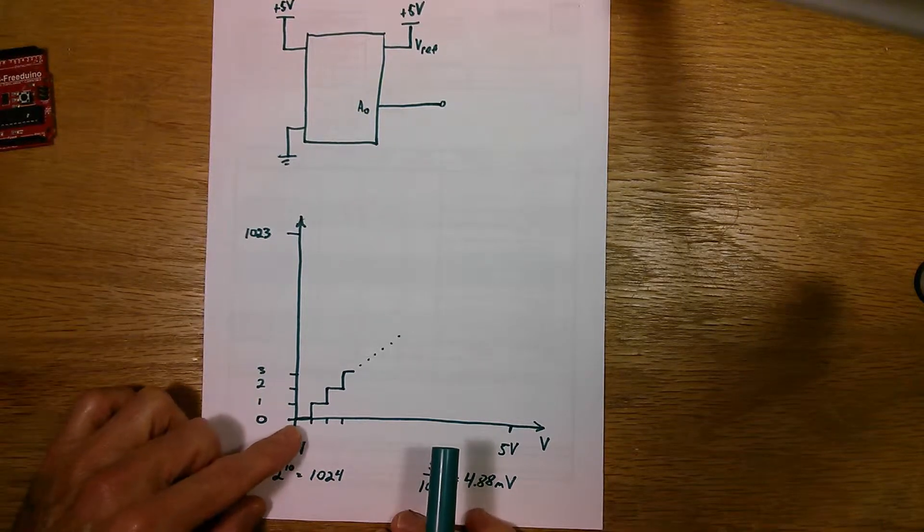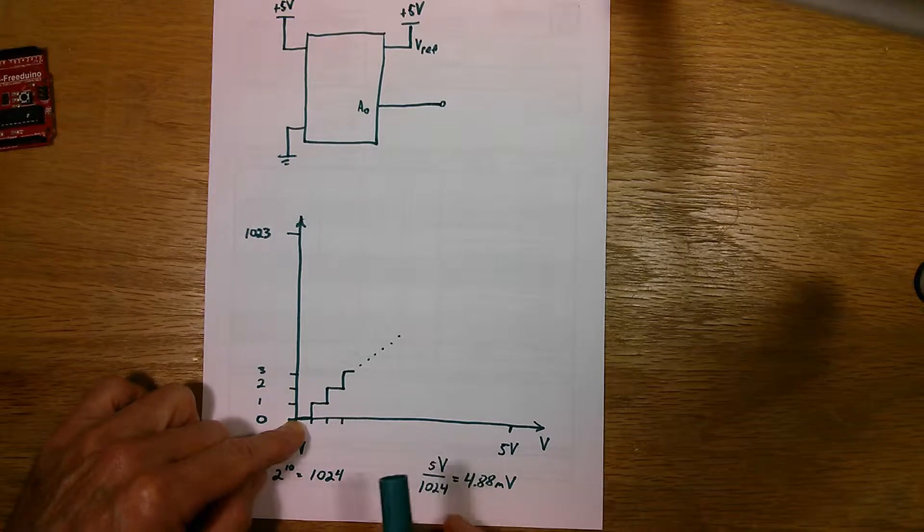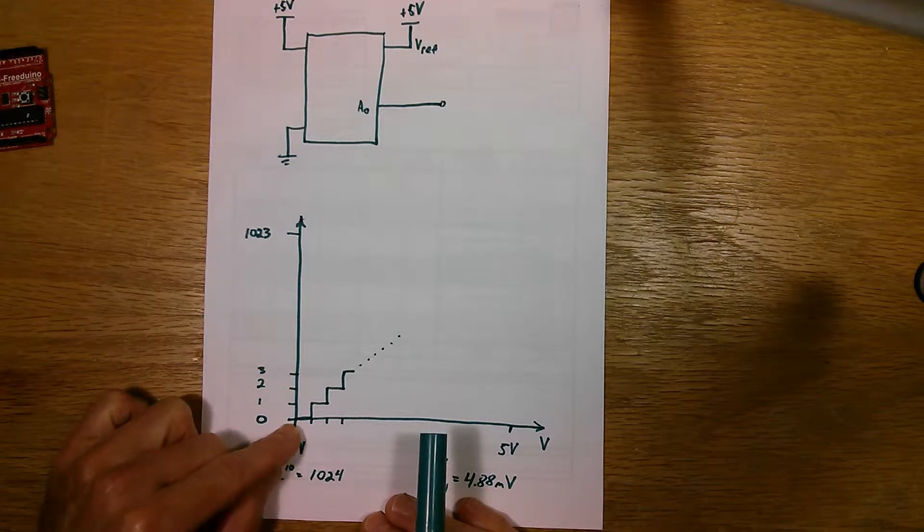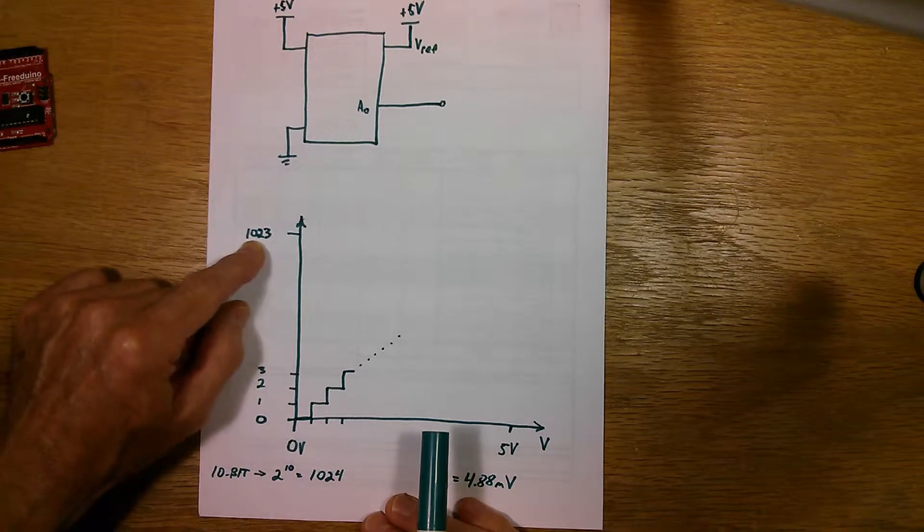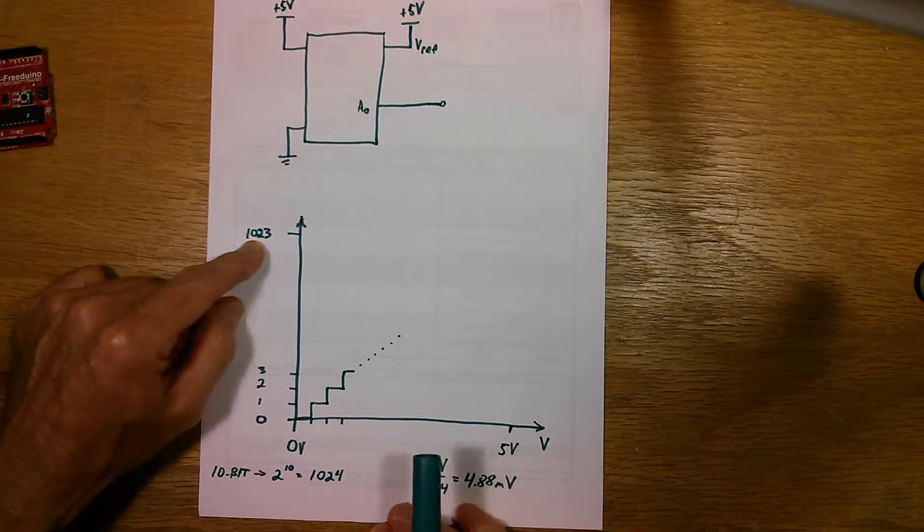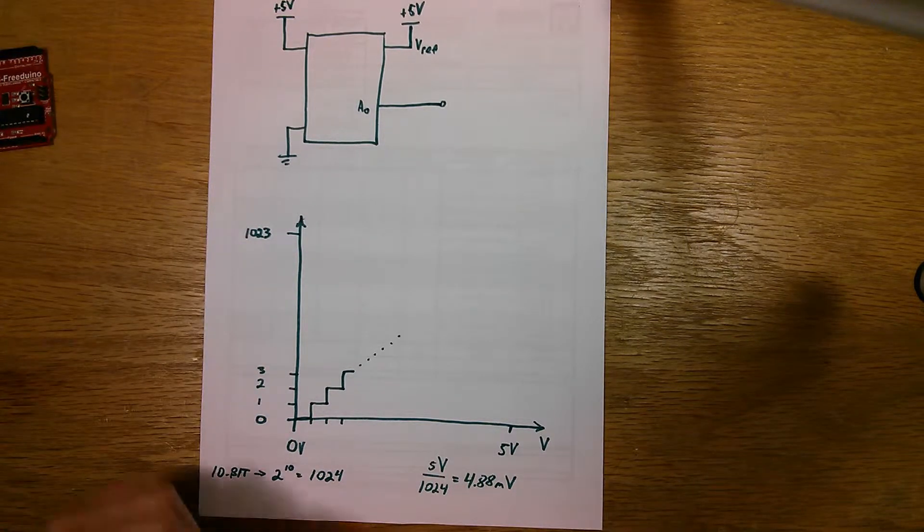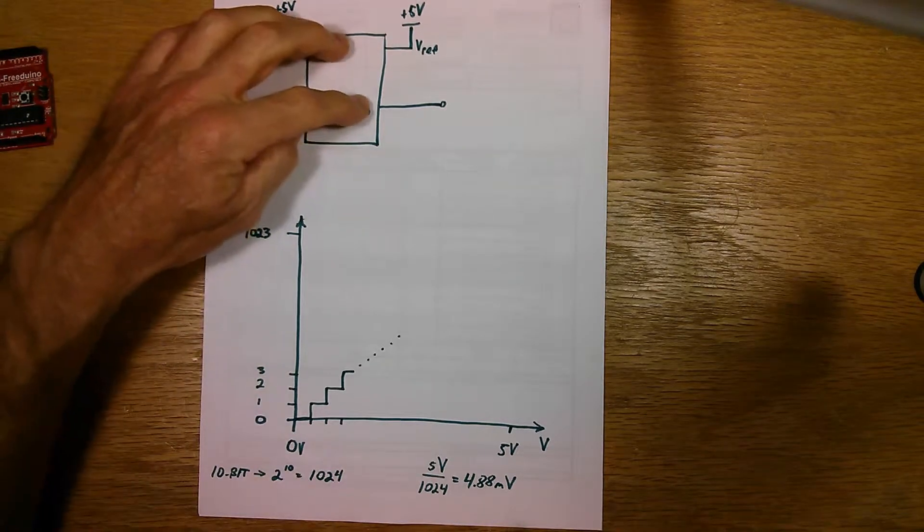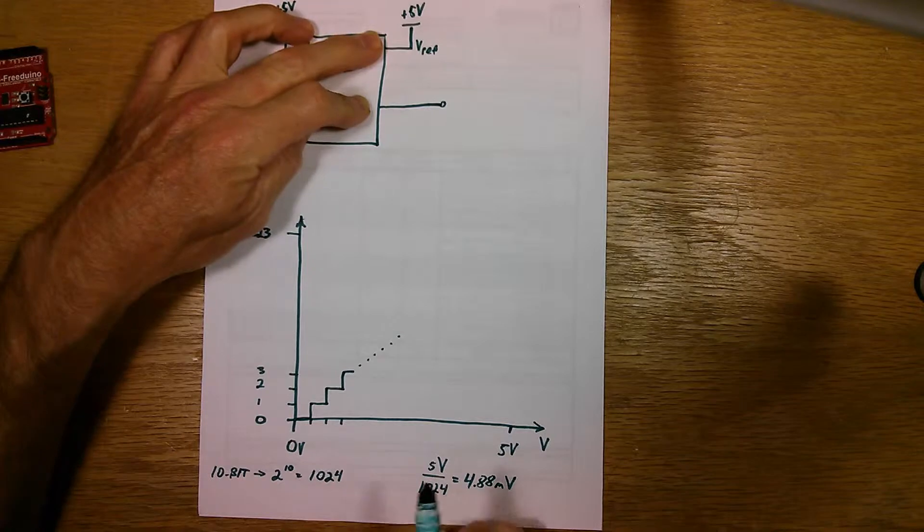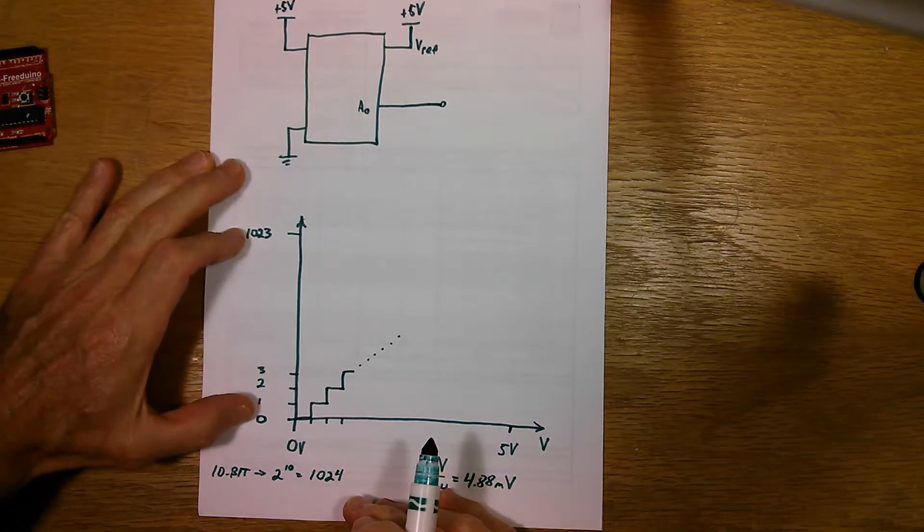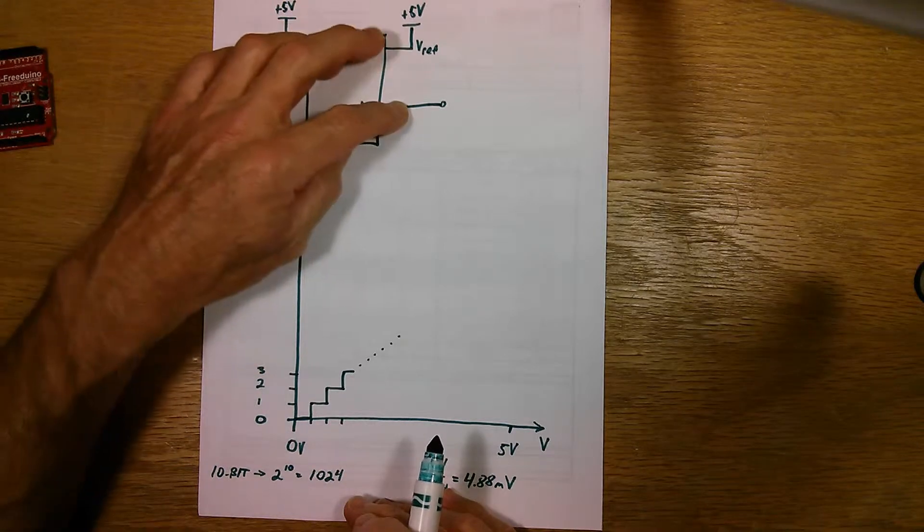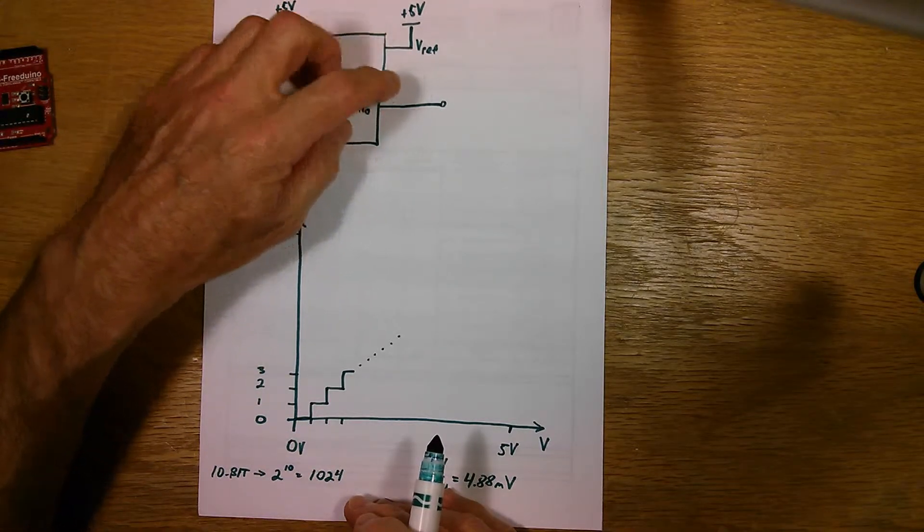And so it can read, the output, the number that it'll come out of the A to D converter is anywhere between zero and 1023. And what it looks like is that the A to D converter looks at the voltage, compares it to the five volts, and gives a number in the range of zero to 1023, which is the same ratio as the input voltage is to the five volts.